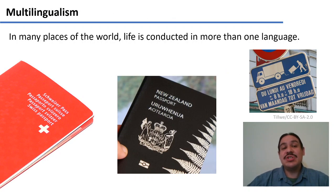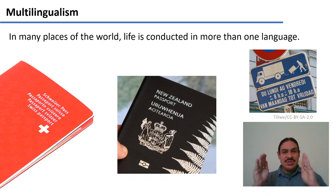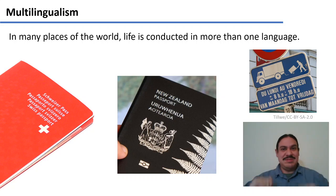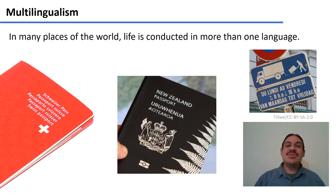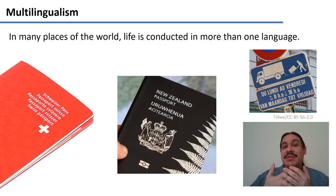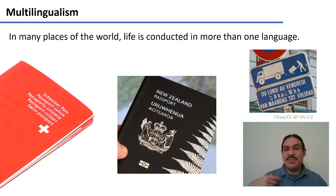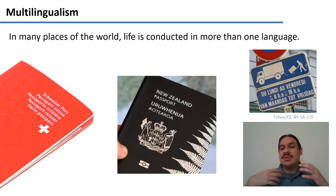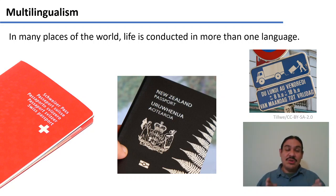The most basic combination is multilingualism: there are two languages and sometimes you're speaking English and sometimes you're speaking something else. In Switzerland, there are four official languages: German, Italian, French, and Romansh, which is another Romance language. In theory, you could conduct your entire life in Romansh, and the government needs to provide schools that can educate you in that language and function in all languages equally.